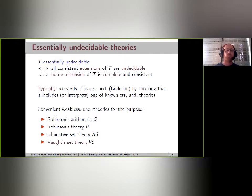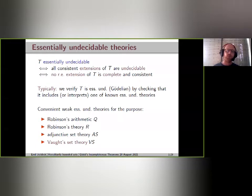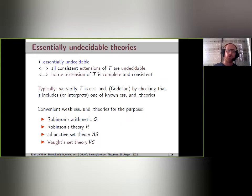One convenient theory used for this purpose is adjunctive set theory. There is an even weaker set theory that is essentially undecidable, originally described by Vaught and denoted Vs, and that will be the subject of this talk.